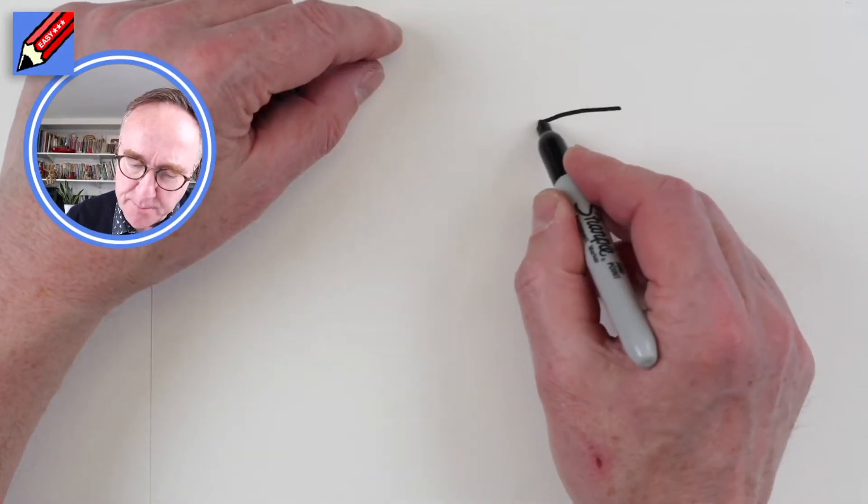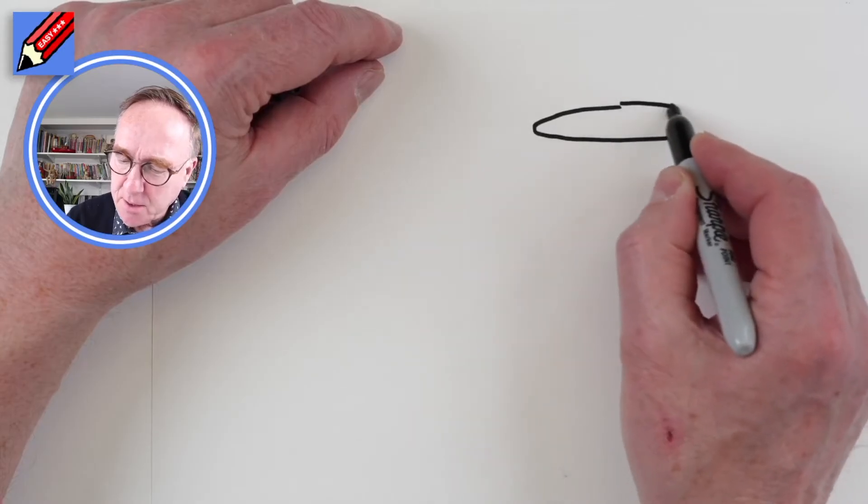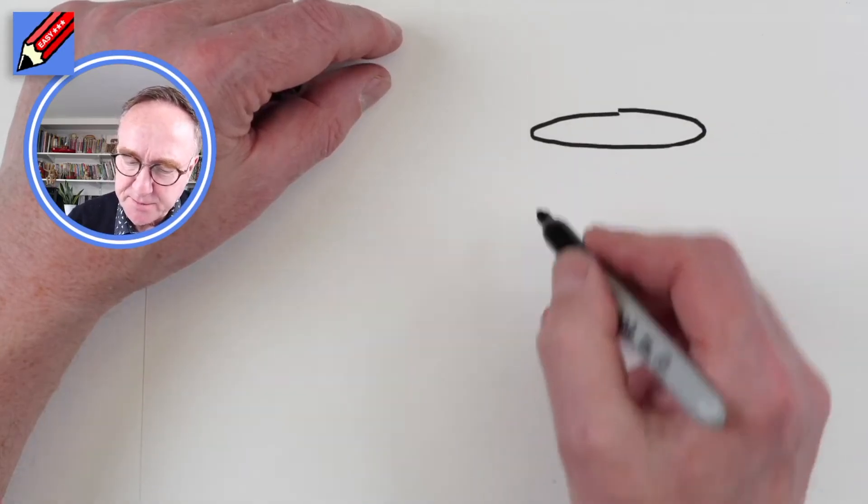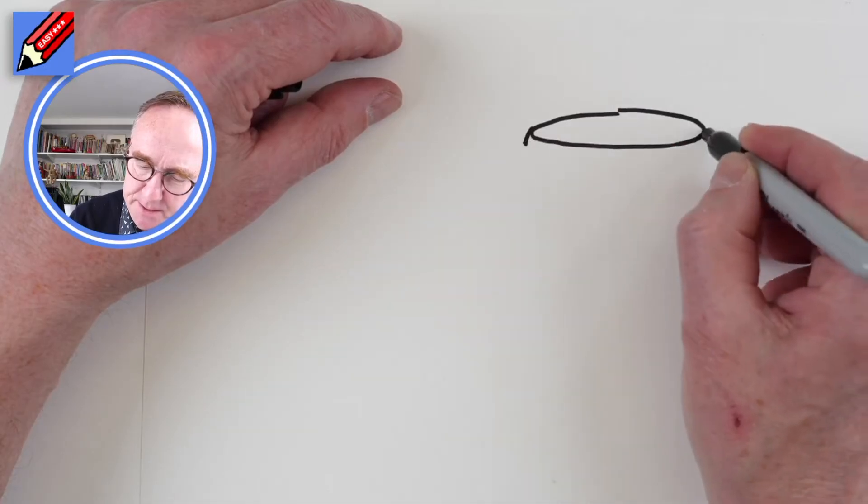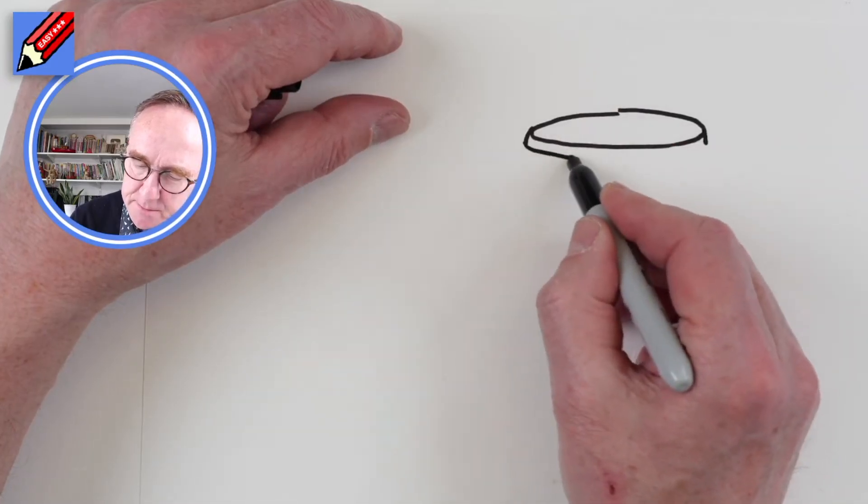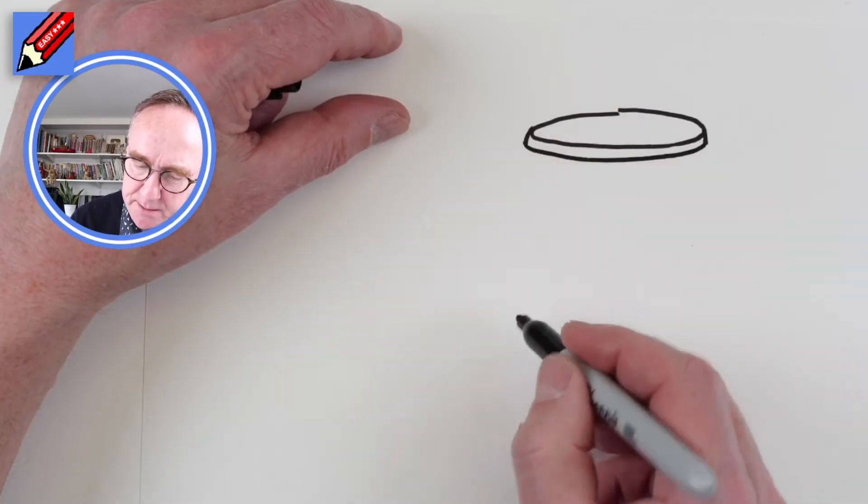So I'm going to start with an ellipse at the top, kind of a sausage kind of shape, and then I'm going to come down a little bit on each side and then join those up like that.